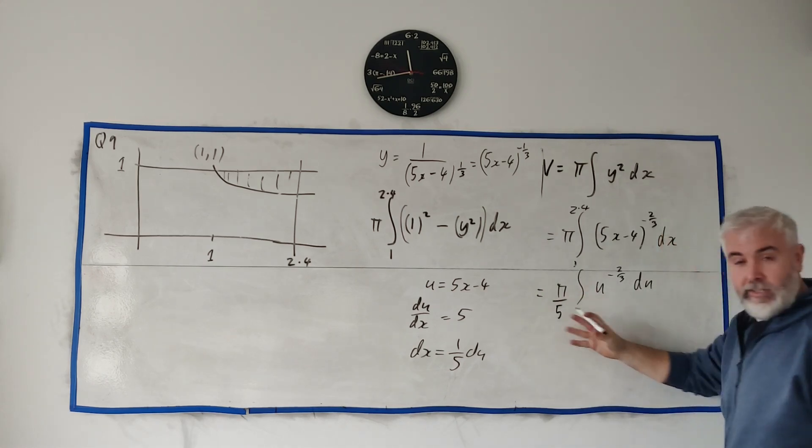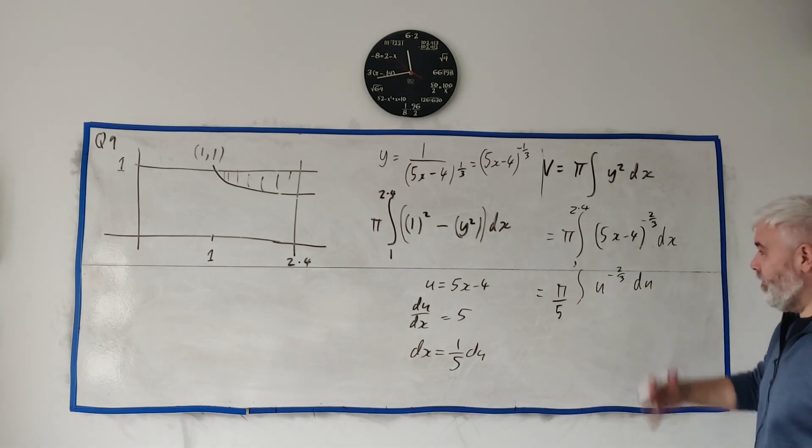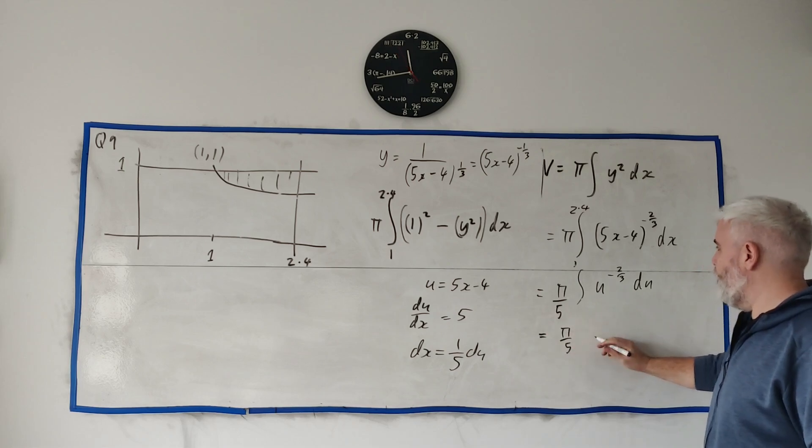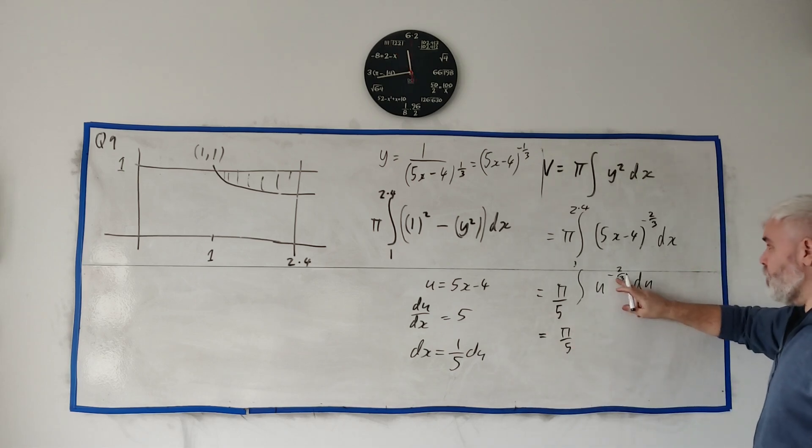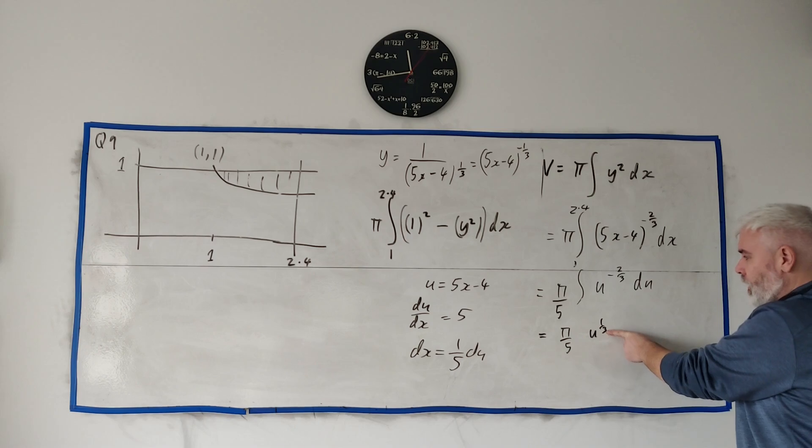Different numbers though so I won't bother writing them in, we'll just fix it back in a minute. And this is equal to pi over 5. To integrate we just add 1 to this number and that becomes u to the 1/3, and then we divide by this new number. Dividing by 1 over 3 is like multiplying by 3.